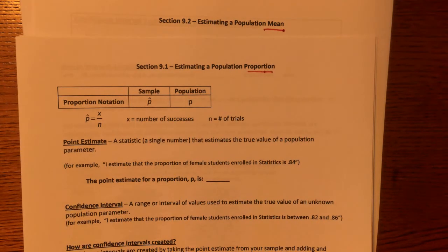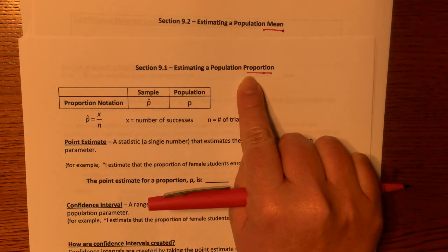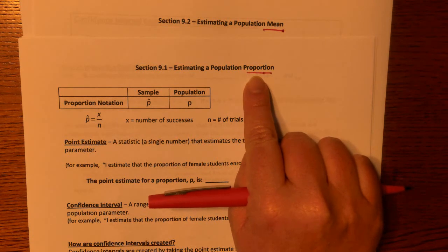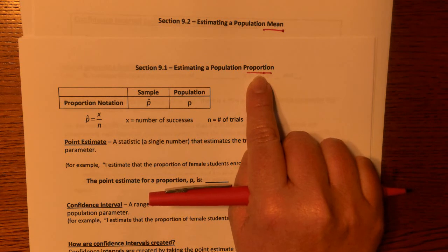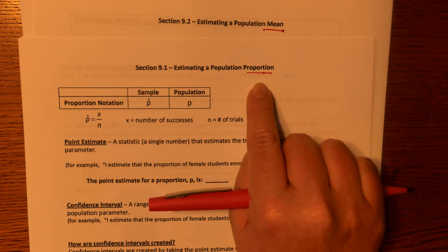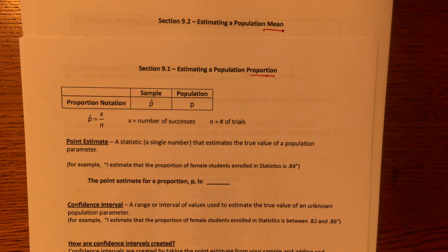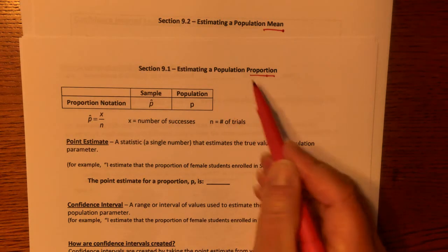The big difference between the two is what type of question you're asking people. If you're asking a yes or no question, you're dealing with proportions. For example, if you asked people 'do you like chocolate chip cookies?' or 'do you watch the TV show Friends?' or 'are you a Dallas Cowboys fan?' — those are all yes or no questions, so you're dealing with proportions.